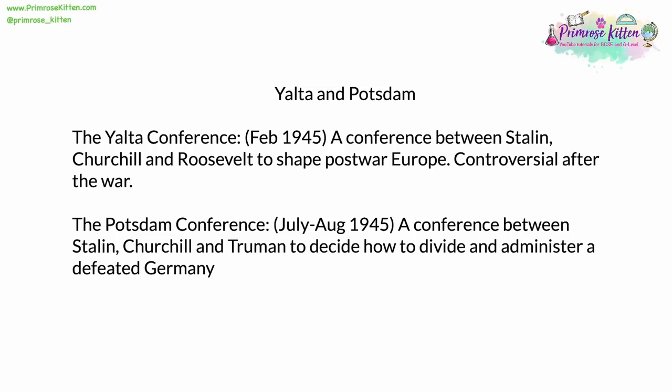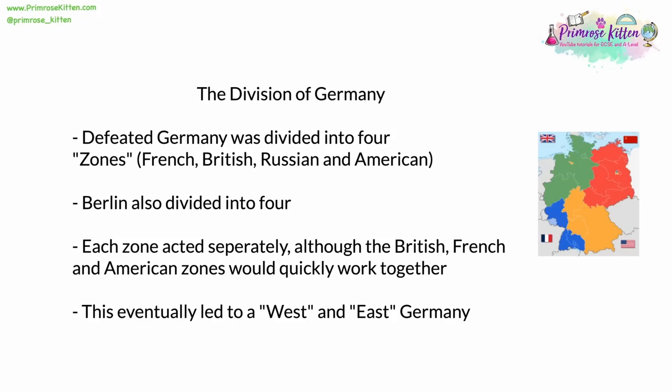Following the military defeat of Germany, the country was divided into four zones: a British zone in the northwest, a Soviet zone in the east and northeast, an American zone in the south, and a smaller French zone in the southwest. Berlin was also divided into four zones. Despite being nominally within the Soviet zone of occupation, it was instead divided between the four powers.